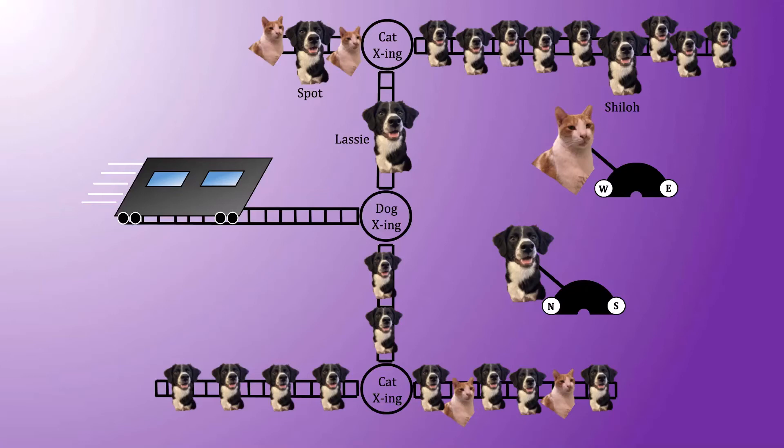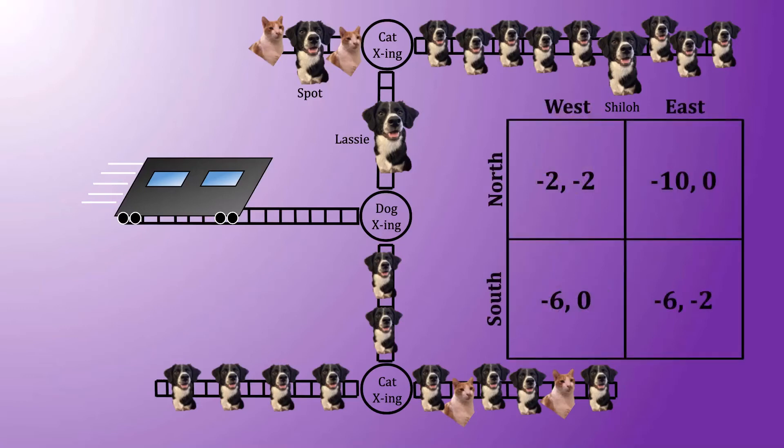Well, to answer that question, it may help to aggregate the number of animals struck into a payoff matrix. The rows are the dog's choices, and the columns are the cat's choices. The first payoff in each box represents the number of dogs hit, and the second payoff is the number of cats hit.